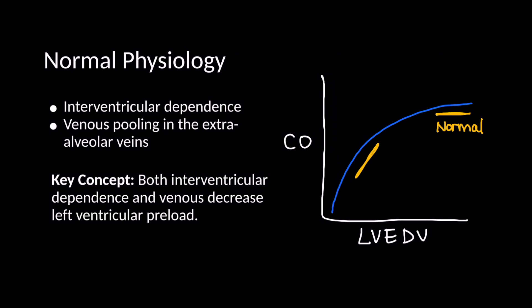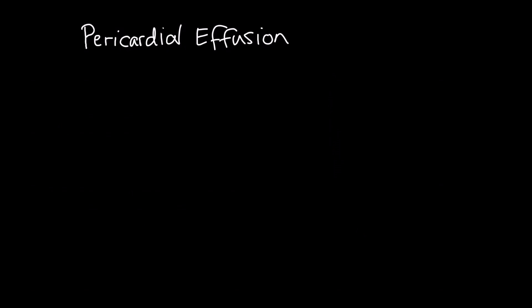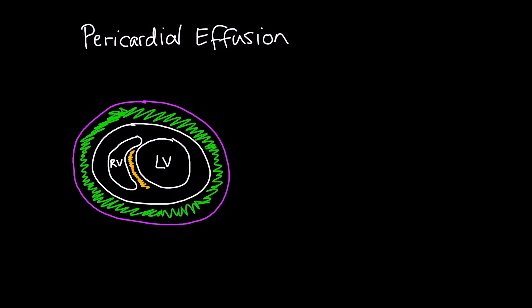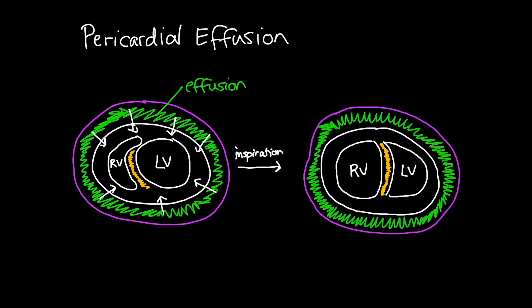Let's explore this physiology in the presence of a pericardial effusion, returning to the concept of interventricular dependence. This is a cross-sectional view of the heart, similar to the parasternal short axis view. Surrounding the heart is the pericardium in pink, and within the pericardial space there is now a large effusion in green. When the pericardium cannot stretch further to accommodate the effusion, the effusion exerts an inward pressure against the myocardium and limits expansion and filling of the cardiac chambers. During inspiration, there is increased venous return to the right ventricle. However, because of the effusion, the RV free wall cannot expand outward to accommodate this increased preload. As a result, the RV pushes the interventricular septum towards the LV, decreasing the LV cavity size, thus decreasing LV preload, reducing LV stroke volume and cardiac output.